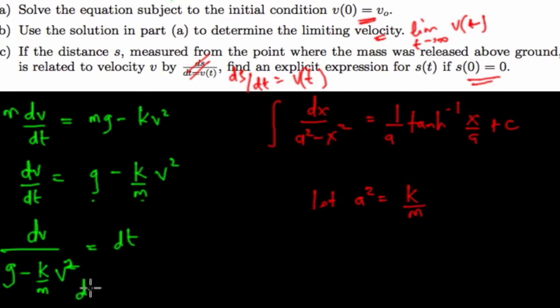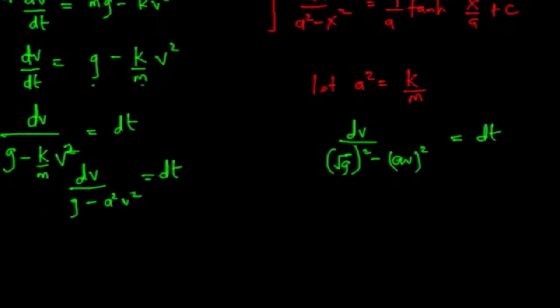So what we have is going to be dv divided by g minus a squared v squared equals dt. So when we bring down to the sides, we have dv over root g squared minus av squared equals dt.